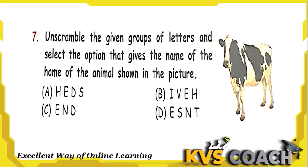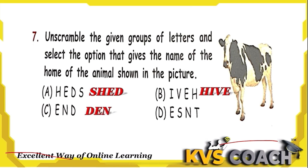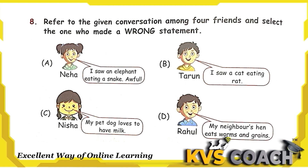Question 7: Unscramble the letters to find the name of the animal's home shown in the picture. Option A is shed — home of cow. Option B is hive — home of bee, also called beehive. Option C is den — home of lion. Option D is nest — home of birds. The picture shows the home of cow, so the answer is shed.